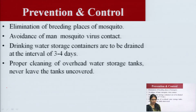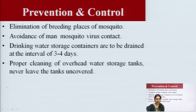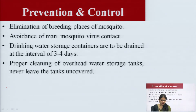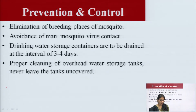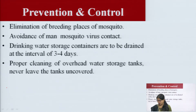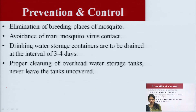Dengue virus is transmitted to humans through mosquito saliva. The virus replicates in target organs, then infects white blood cells and lymphatic tissues, and is released into the bloodstream. If a second mosquito ingests the virus with blood, it replicates in the mosquito midgut and infects the salivary glands, where the virus replicates and continues the life cycle.